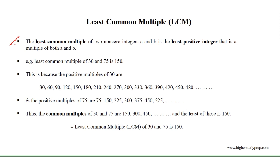Least common multiple: the least common multiple of two non-zero integers A and B is the least positive integer that is a multiple of both A and B. For example, the least common multiple of 30 and 75 is 150.